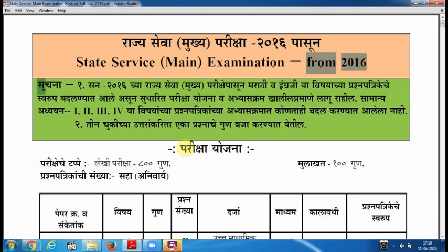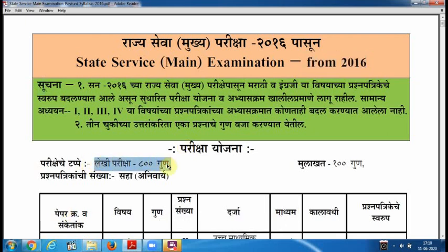The mains syllabus basically has 6 papers. Paper 1 and Paper 2 are language papers which are compulsory — in Marathi and English. The remaining 4 papers are General Studies. So 6 papers are compulsory for you, and the total marks for 6 papers are 800. After that you have an interview which has 100 marks, so the cut-off is 900 marks.